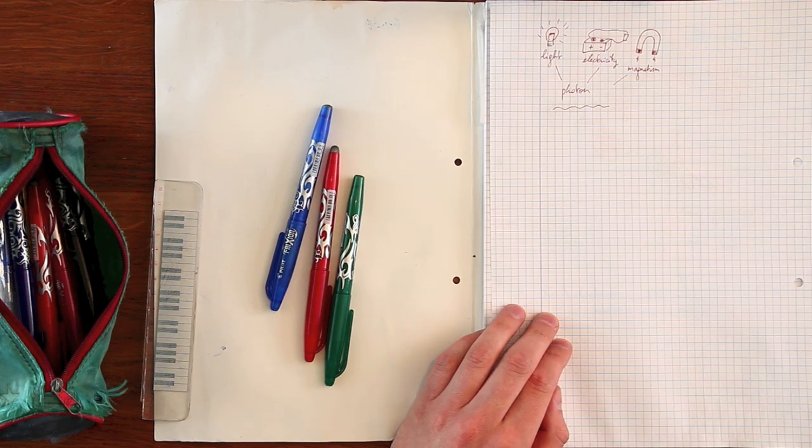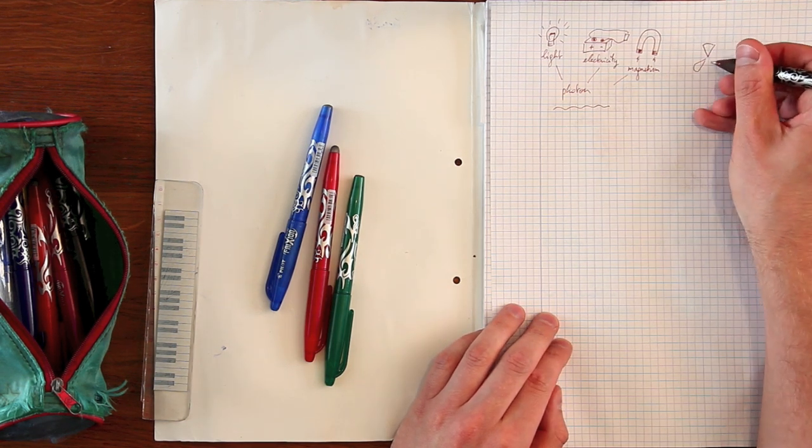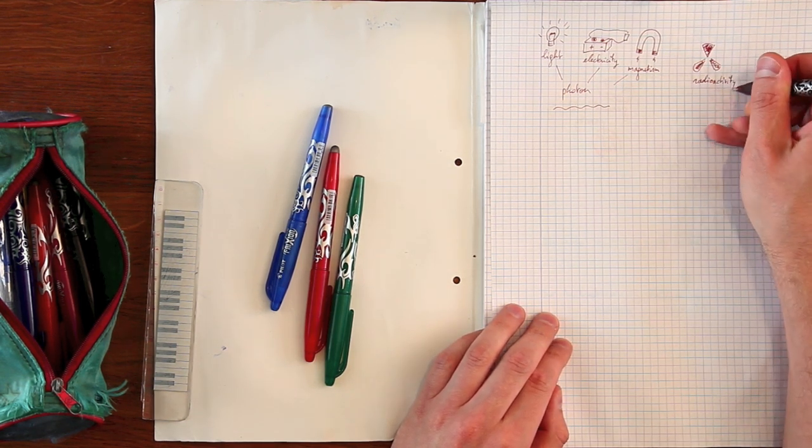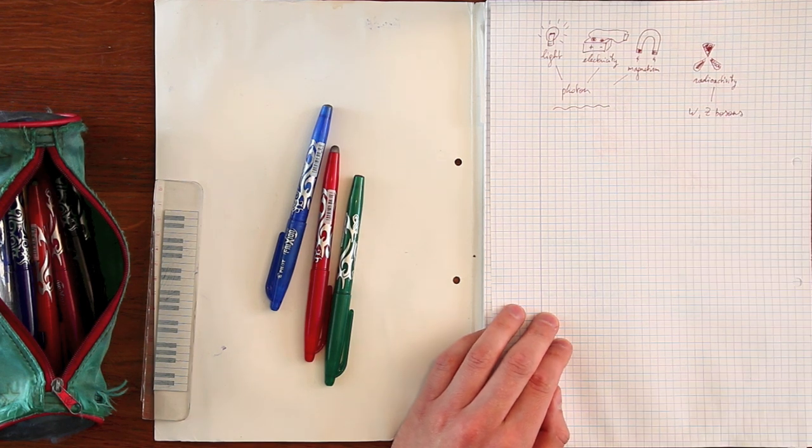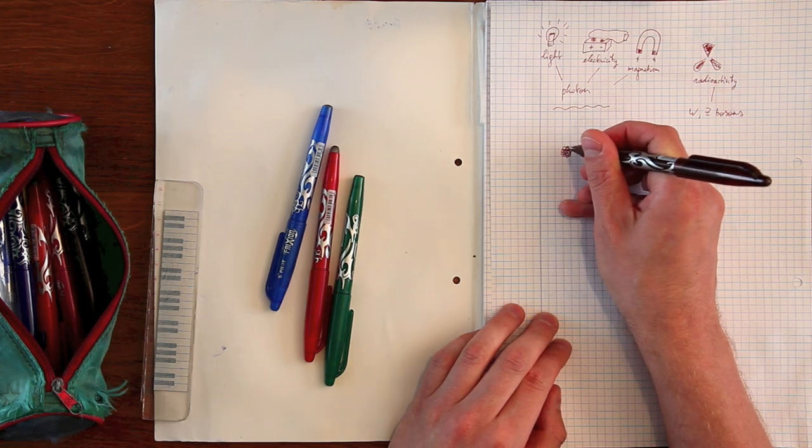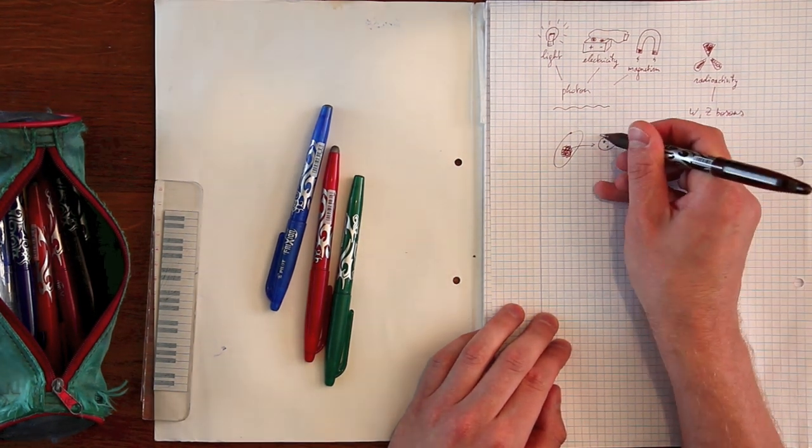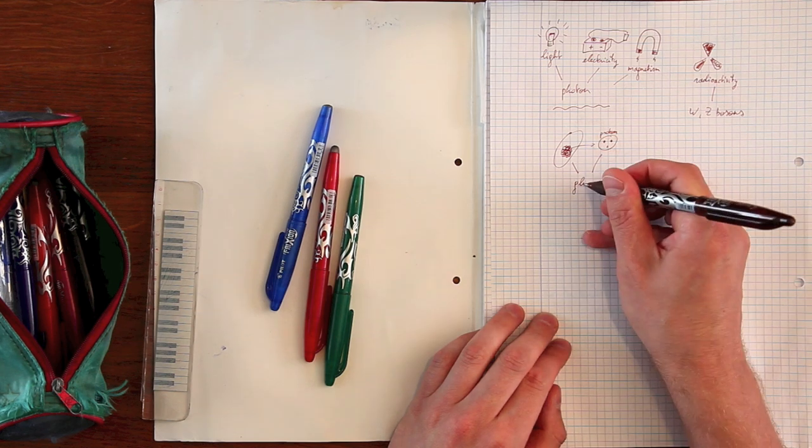The weak nuclear force, which is responsible for nuclear decay and its radioactivity, by introducing the W and Z bosons, and the strong nuclear force, which keeps protons and neutrons together in the nucleus and quarks in a proton, by introducing the gluon.